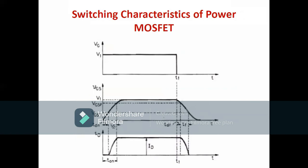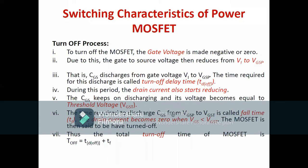The total turn-off time is tdf + tf, and the total turn-on time is td(on) + tr. Whenever you get a question to explain the switching characteristics of a power MOSFET, you must draw the diagram clearly, mention the parameters, and note that it is a controlled device. Apply a positive gating pulse to turn on the MOSFET and explain the turn-on process, then explain turn-off by applying zero or negative gate pulse, mentioning each time period — that is very essential.